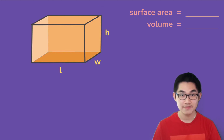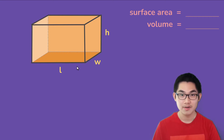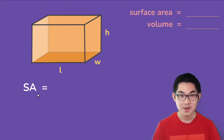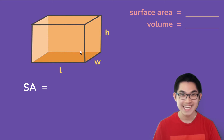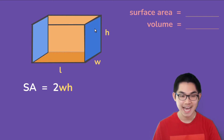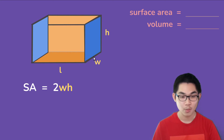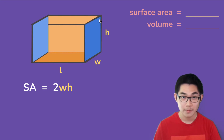Hi guys, in this video I'm going to show you how to find the surface area and the volume of rectangular prisms. To find the surface area, we need to find the area of each side of the rectangular prism and add them all together. We know that this side is the same as this side, and the area of this side is the width times the height.